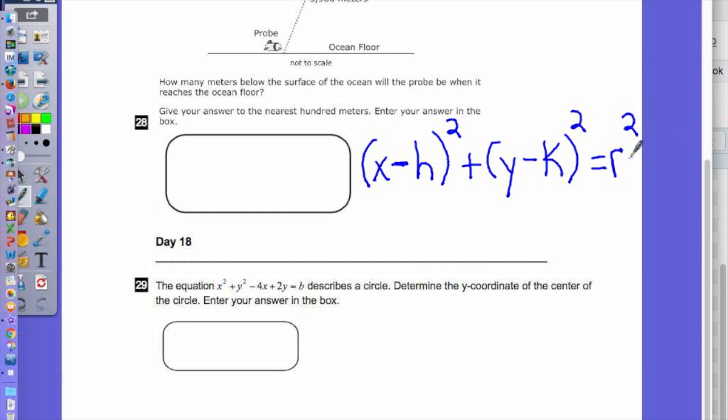And whatever number is here is the square root of the radius. So if this equals 25, the square root of 25 is 5. If this equals 81, square root of 81 is 9. If this is a negative number, you have done something wrong, because you can't take the square root of negative 81. We haven't learned how to do that yet.